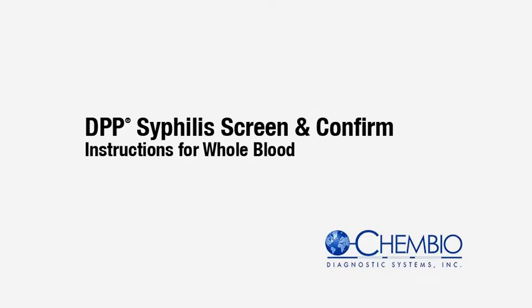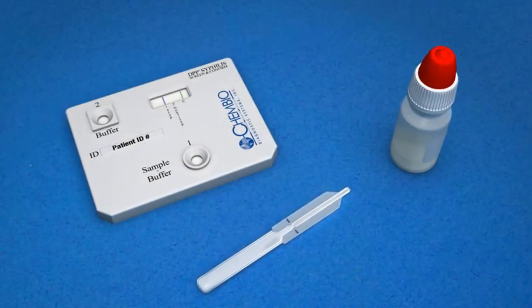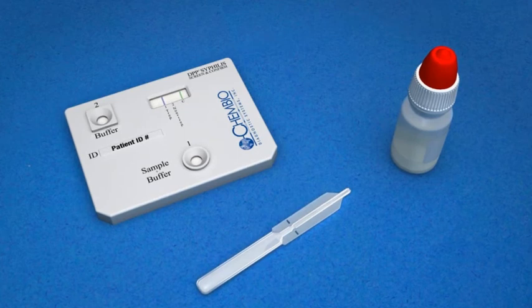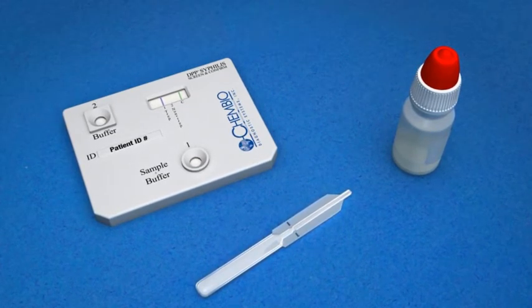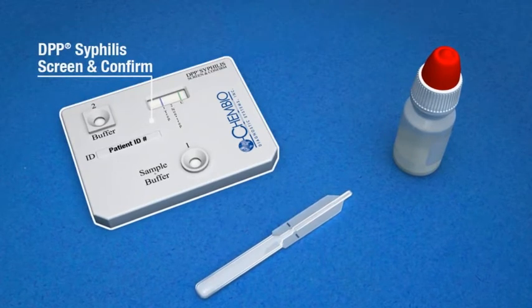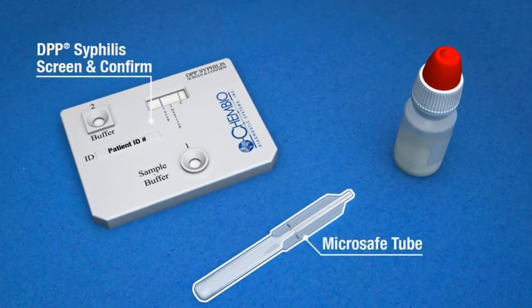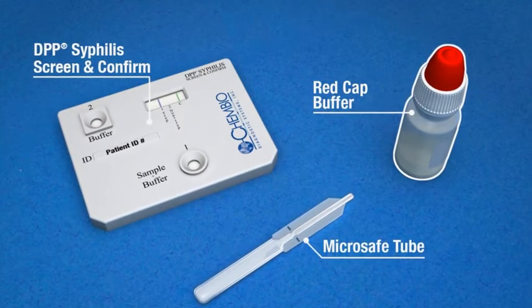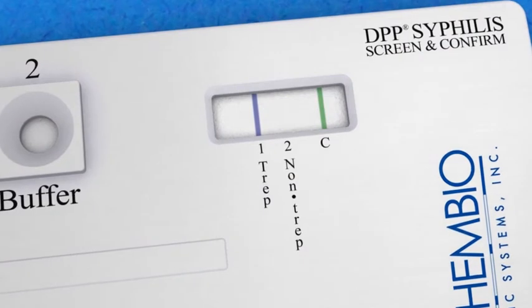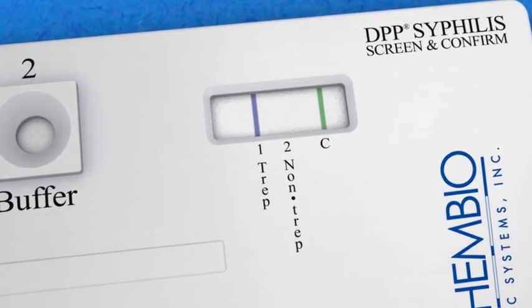DPP Syphilis Screen and Confirm instructions for whole blood. The DPP Syphilis Screen and Confirm test for whole blood contains the following components: the DPP test device, a micro safe tube, and a red cap running buffer bottle. Note that the DPP test device has blue and green lines in the test window.